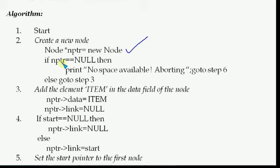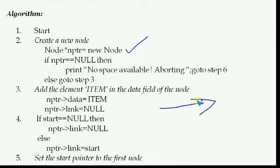But if nptr is not null — else go to step 3 — meaning allocation succeeded and the new node is created. In step 3: add the element 'item' in the data field of the node. We write: nptr->data = item. Since nptr is a structure pointer, we use the arrow operator to access its members. Also, nptr->link = null, storing null in the link part.